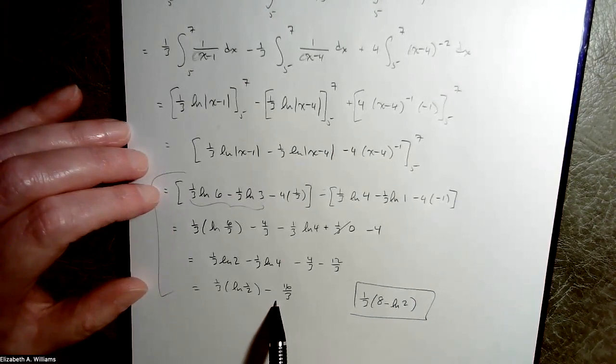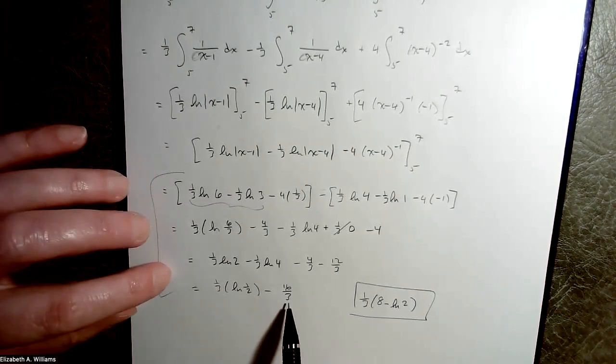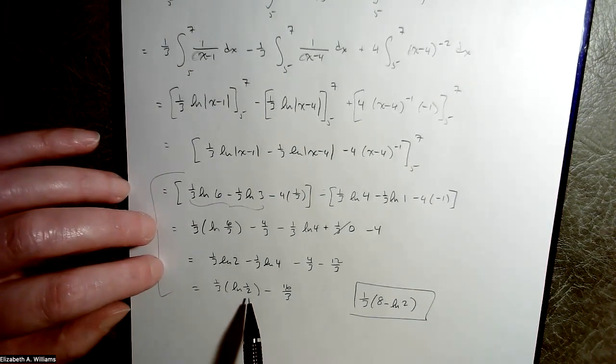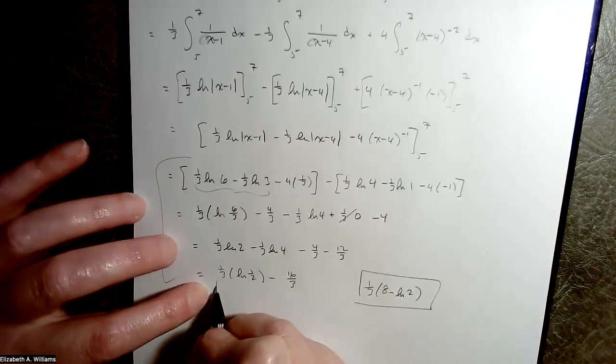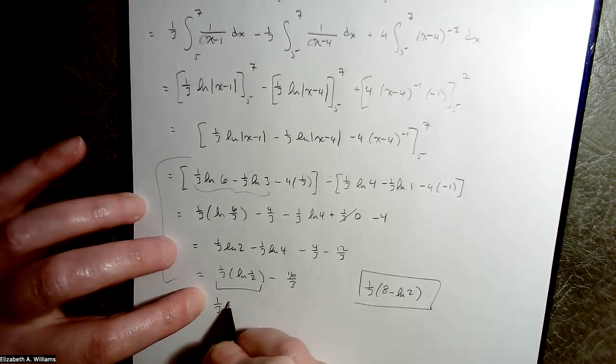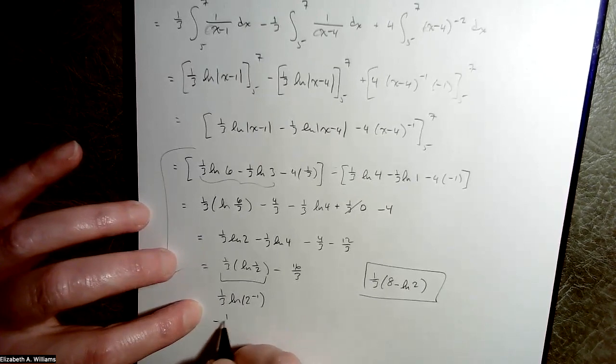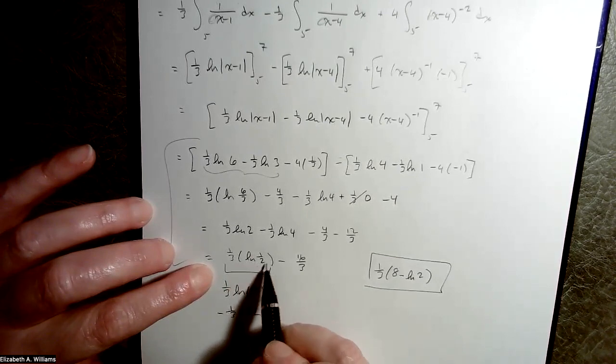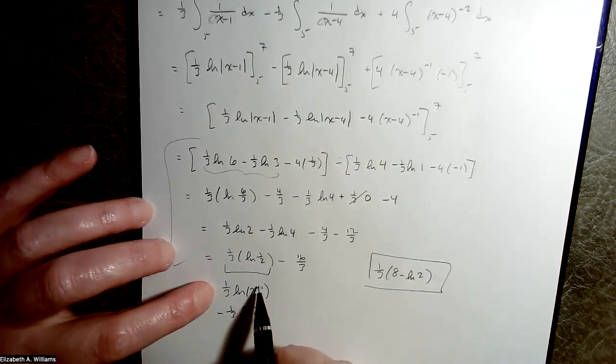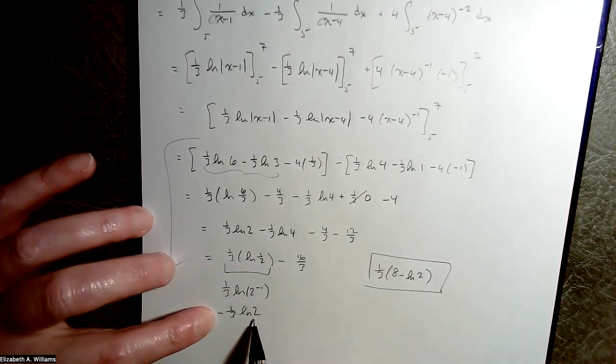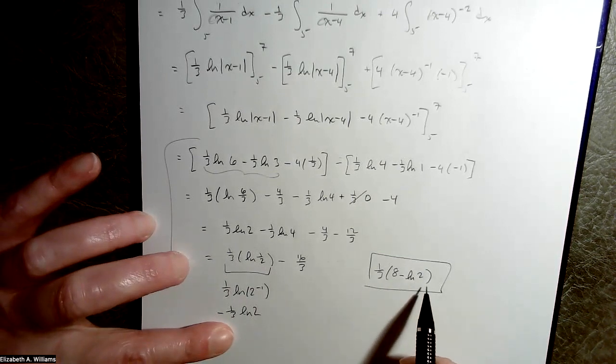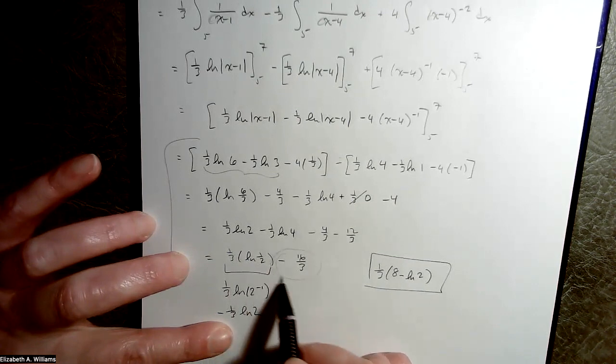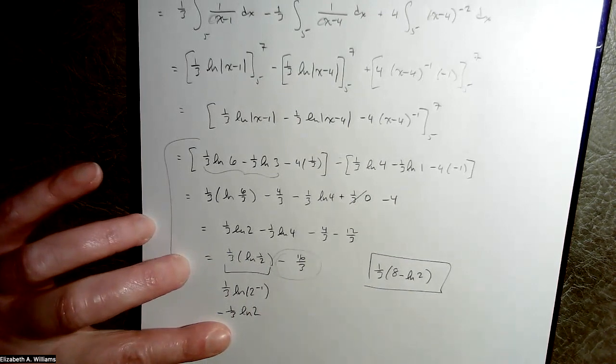Which does not match the mark scheme. The mark scheme says you should get 1/3 times 8 minus natural log of 2. So everything is fine to this point. That's just doing the calculus. When you start giving me petty arithmetic, I start making mistakes. And the reason I'm making mistakes is I'm doing too much in my head and not writing enough steps out.